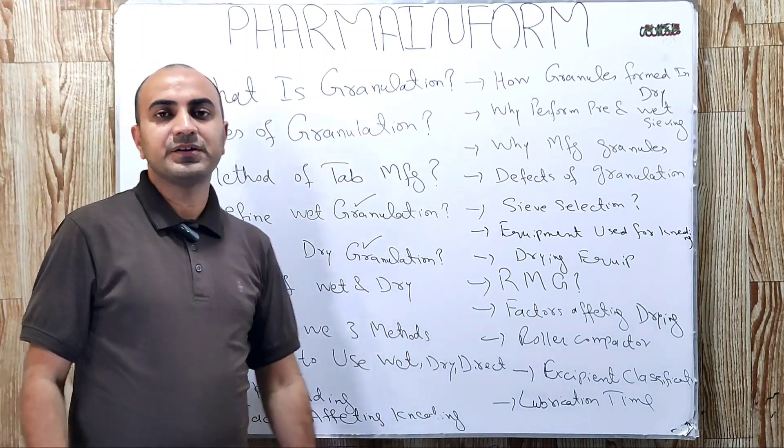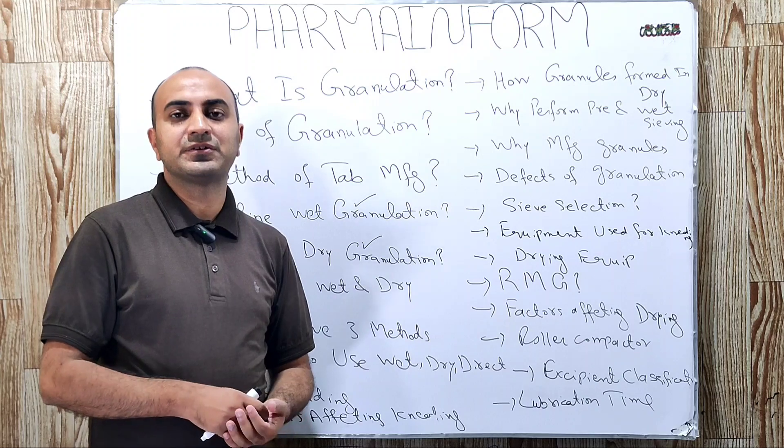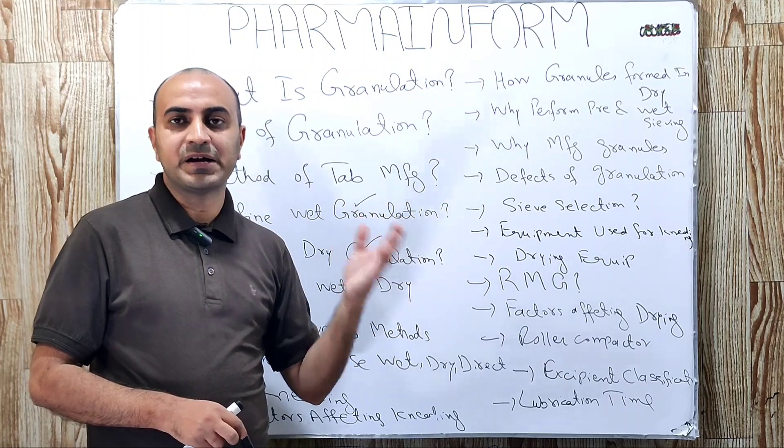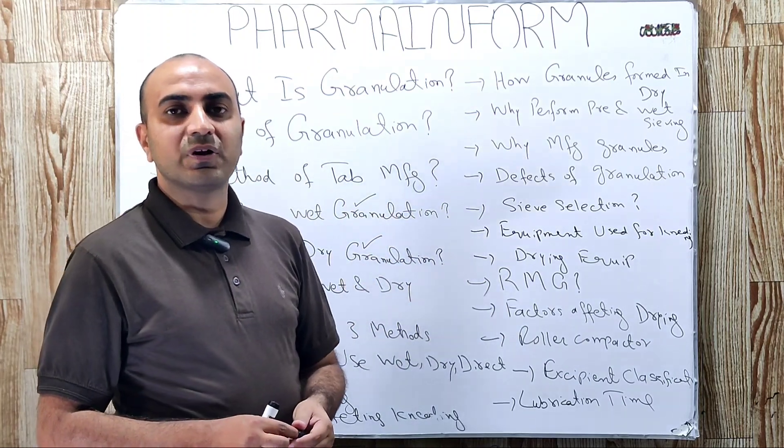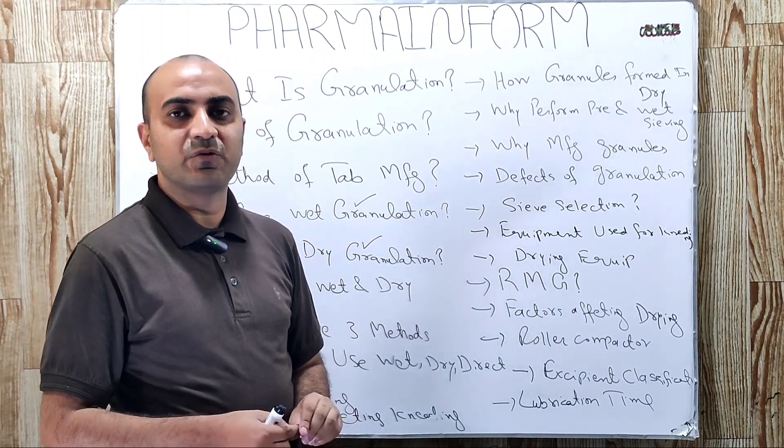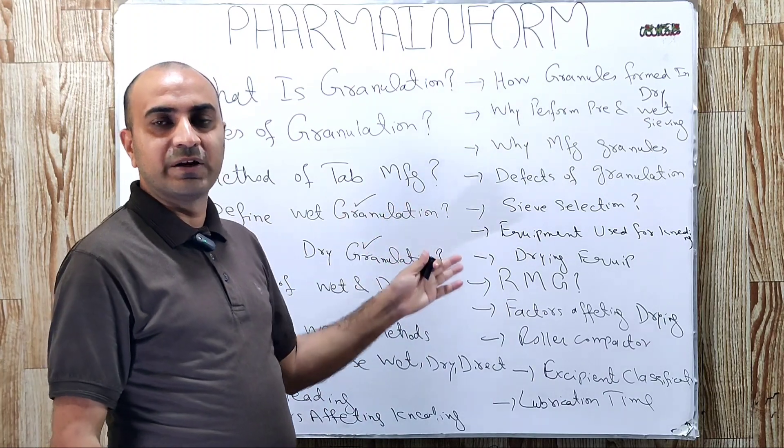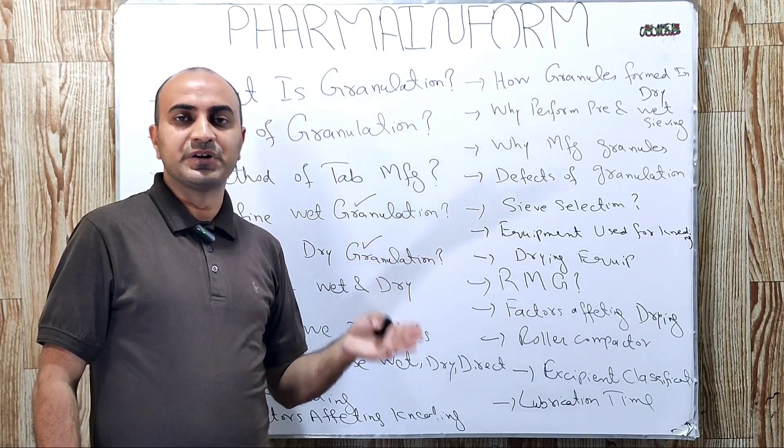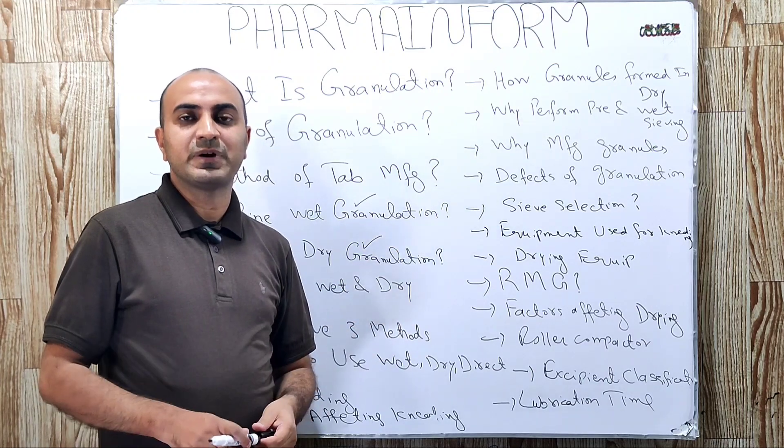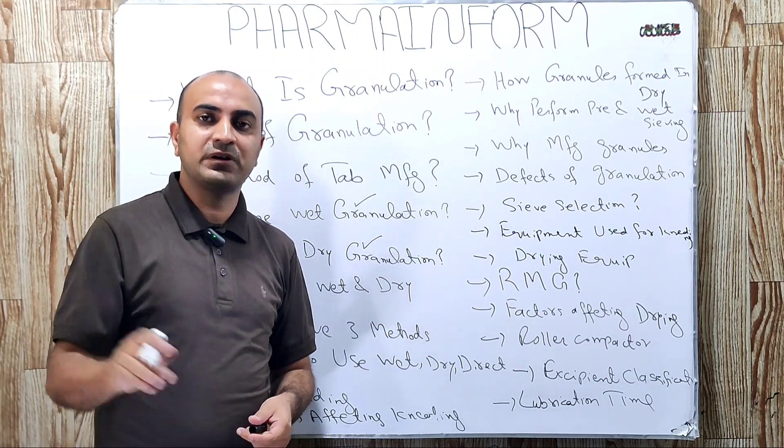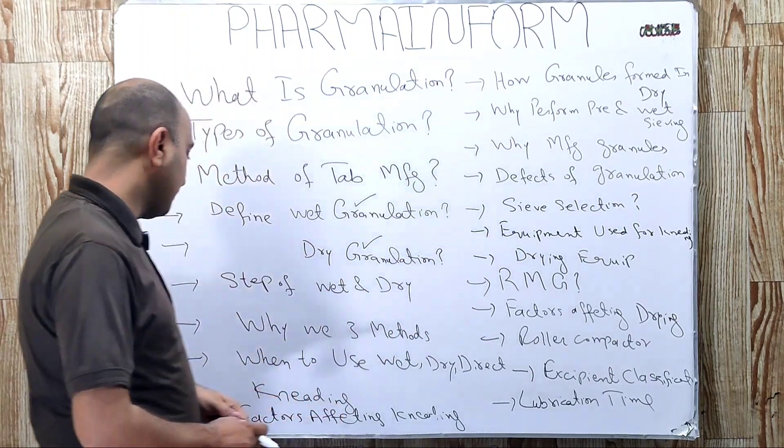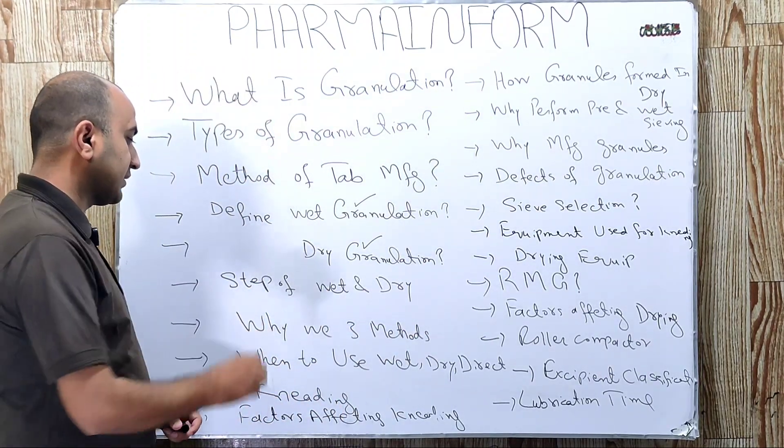Next one is why we use three methods for tablet manufacturing, meaning why we use wet granulation, dry granulation, and direct compression. Because all the products cannot be manufactured by only one method because every method has its some limitations. So we use different methods and according to the product compatibility, we use that specified method for manufacturing of that product.